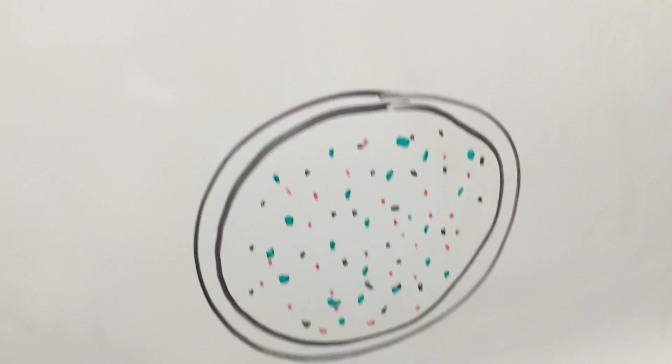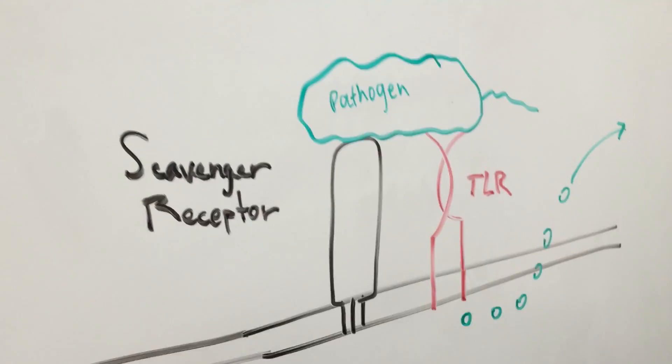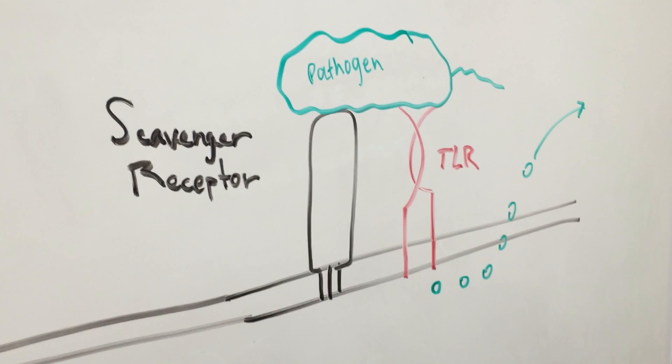Another function of the scavenger receptors is to work with toll-like receptors, which are a different type of cellular surface receptor.